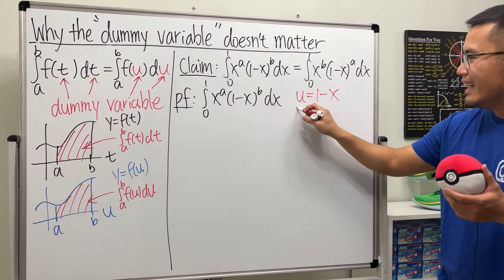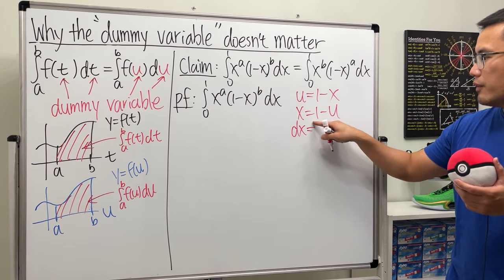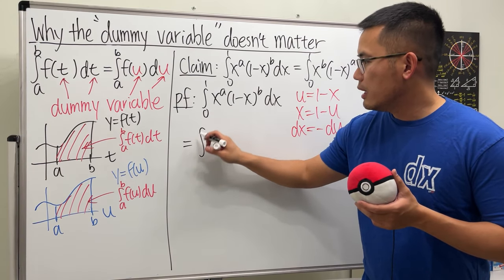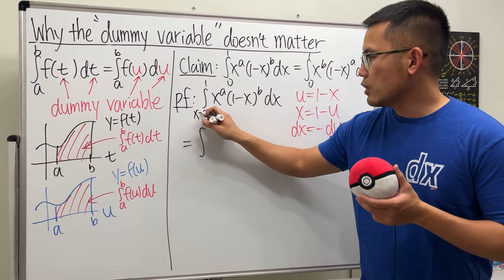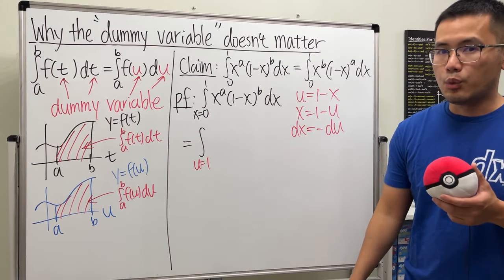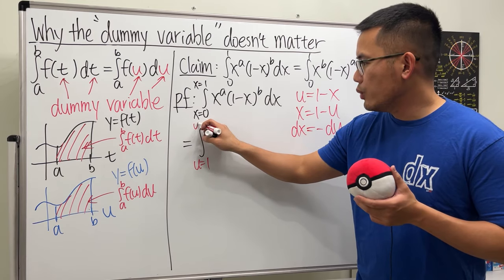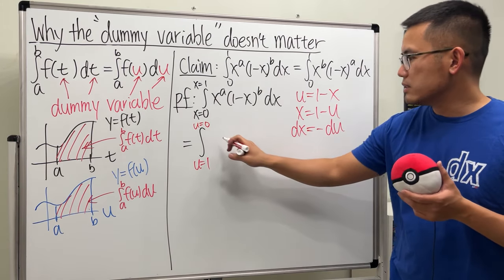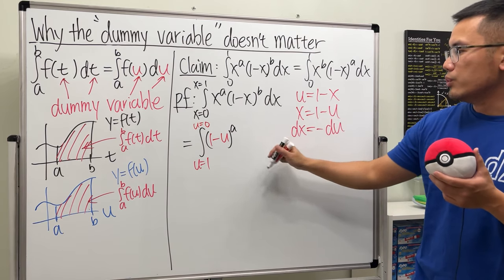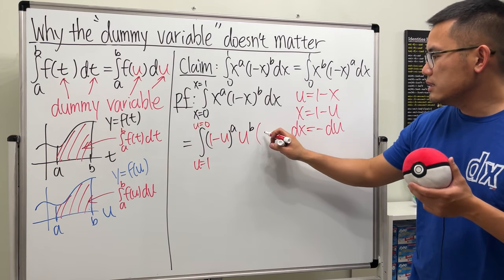We solve for x: x equals 1 minus u. Differentiating gives dx equals negative du. Now we convert the bounds from x to u: when x equals 0, u equals 1 minus 0 equals 1; when x equals 1, u equals 1 minus 1 equals 0. So our integral becomes: from 1 to 0 of (1 minus u) to the a times u to the b, times negative du.